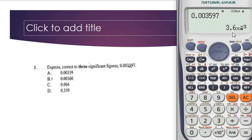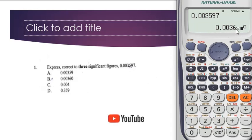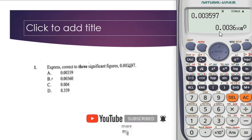What you're doing is clicking Shift and Eng repeatedly until you end up with 0.0036. From 3.6 times 10 to the minus 3, you can tell the answer is 0.0036. Keep clicking until the power of 10 reaches zero, because 10 to the power zero equals 1, so 0.0036 times 10⁰ equals 0.0036. That is the correct answer.